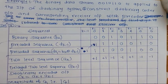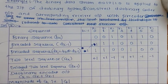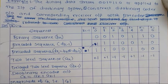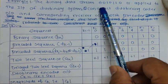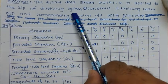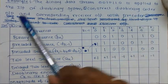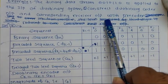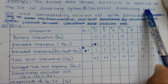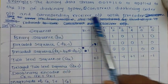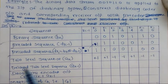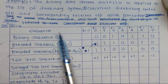In this session we are going to solve a numerical which is based on duobinary encoder with precoder. The problem statement is: the binary data stream 0010110 is applied to the input of a duobinary system. We have to construct the duobinary encoder output and the corresponding receiver output with precoder — so we'll construct both the encoder output and the decoder output while considering the precoder.